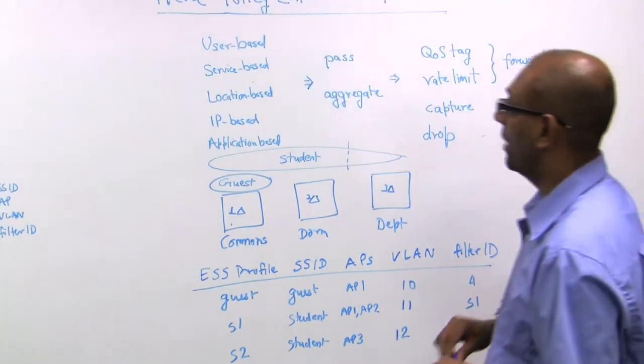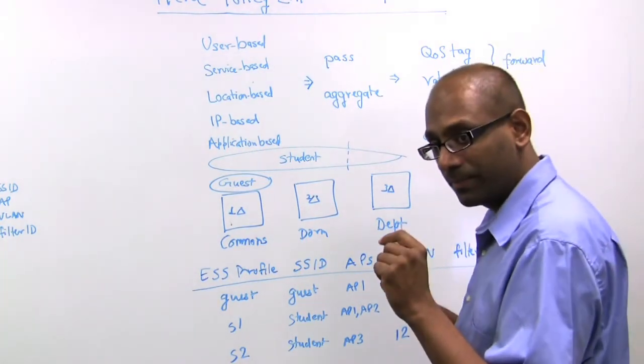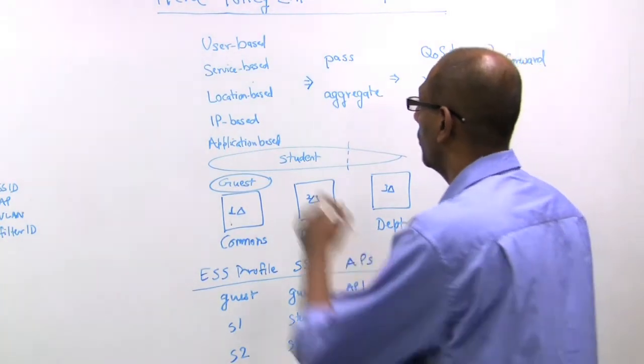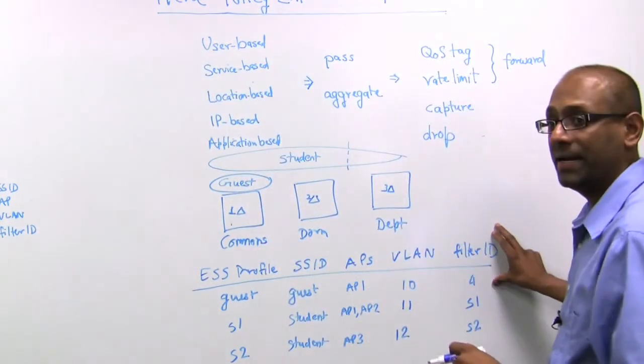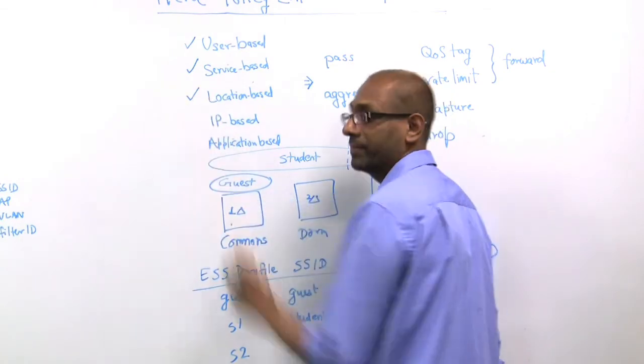So if you step back now, what you can see is, on a per-user basis, we have been able to allocate this filter ID tag that is user-based, service-based or SSID-based, and location-based.